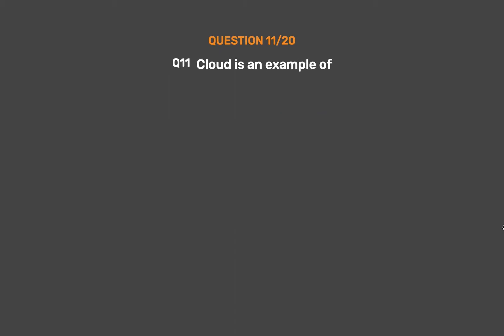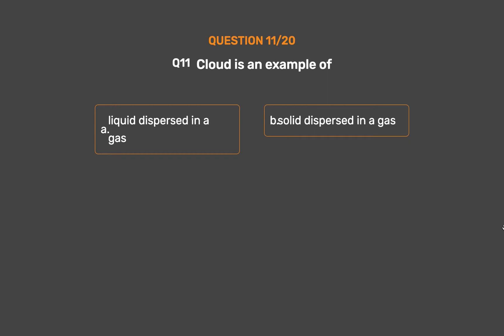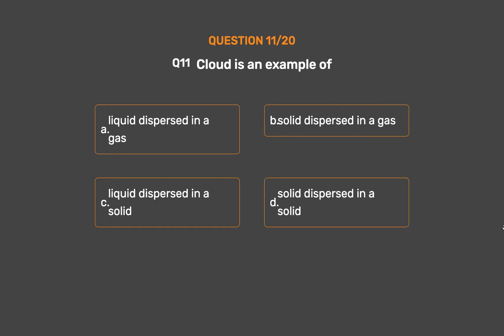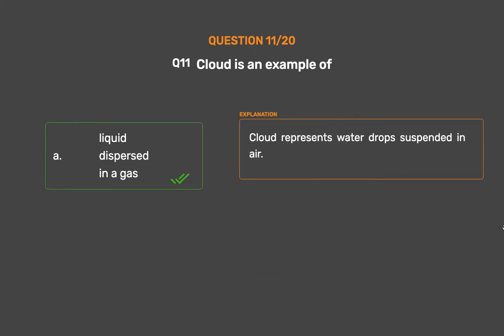Question number 11. Cloud is an example of: Option A: Liquid dispersed in a gas. Option B: Solid dispersed in a gas. Option C: Liquid dispersed in a solid. Option D: Solid dispersed in a solid. The correct answer is Option A: Liquid dispersed in a gas. A cloud represents water drops suspended in air.